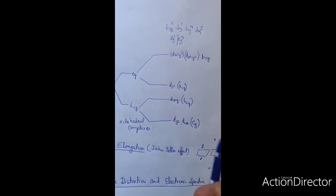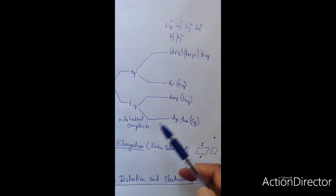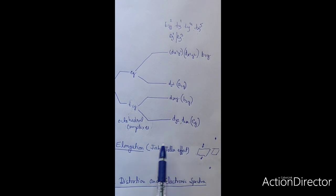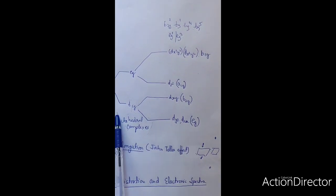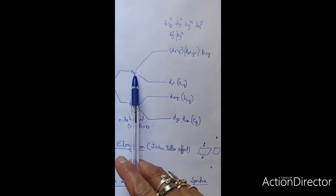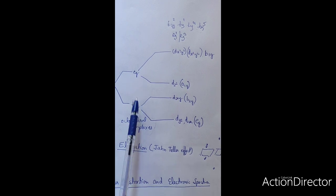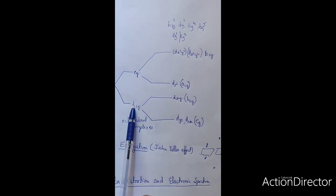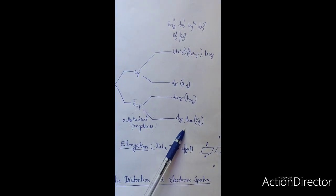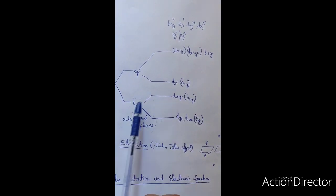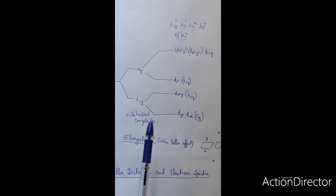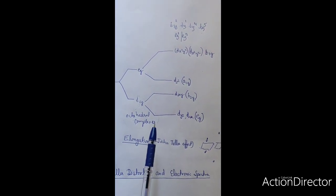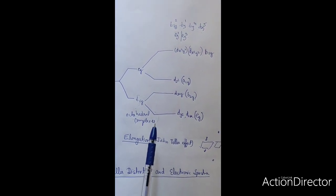Jahn-Teller distortion means this t2g set and eg set lower their symmetry, and after lowering their symmetry, they split into their respective orbitals. This lowering of symmetry removes the degeneracy of electronic states and attains lower energy. Some orbitals attain lower energy and some attain higher energy; overall, the molecule attains lower energy.